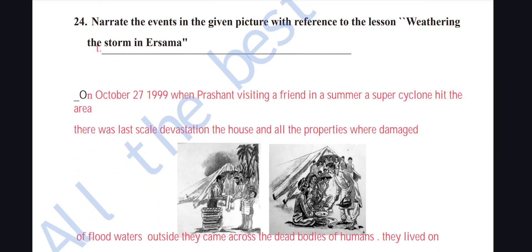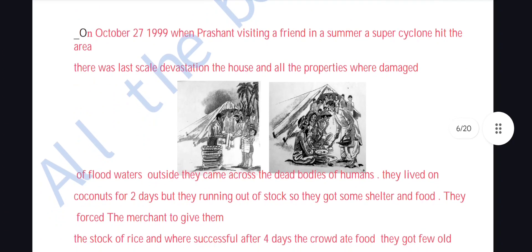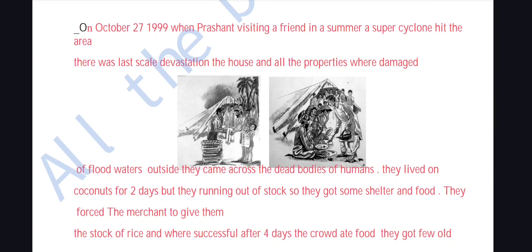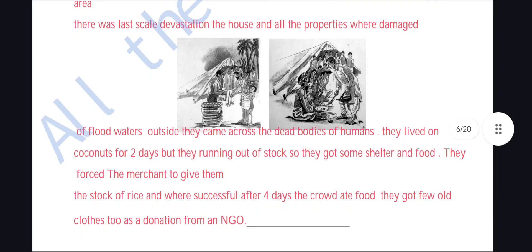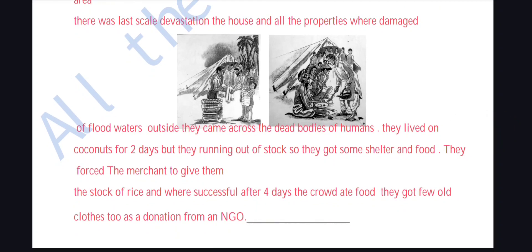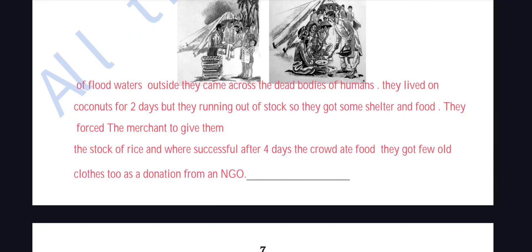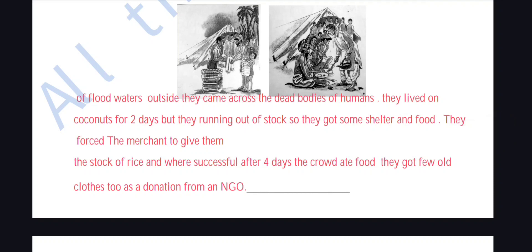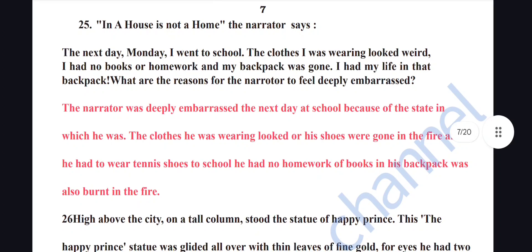Narrate events from the picture about Ersama: On October 27, 1999, when Prashant was visiting a friend, a super cyclone hit the area. There was large-scale devastation — houses and properties were damaged by floodwater. They came across dead bodies of humans, lived on coconuts for two days, then ran out of stock. They forced a merchant to give them rice stock and after four days the crowd ate food. They received old clothes as donation from an NGO.